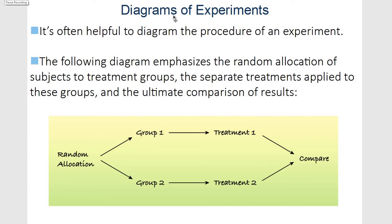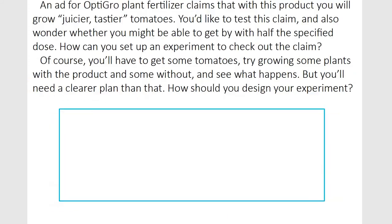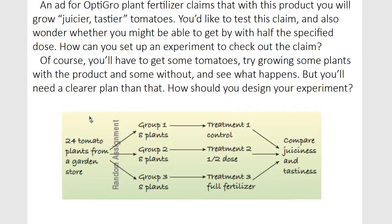Diagrams are super helpful when looking at experiments. They always start with your random assignment, then you get your groups and different types of treatments. For the fertilizer example — we want to make better tomatoes. We have 24 plants from a garden, three different groups: one is the control group, one gets half the dose, and one gets full fertilizer. Maybe you think you can use a little and don't need all the fertilizer — you're trying to cut corners. It's always good to see if there's a change.